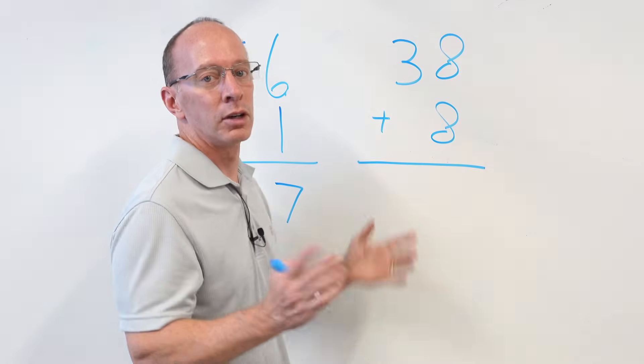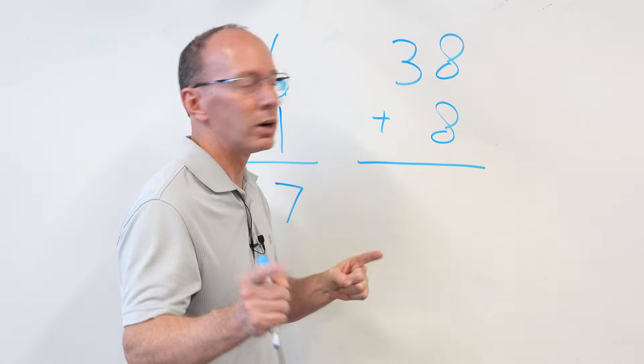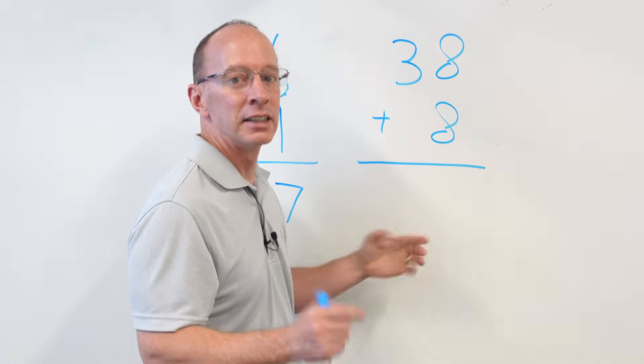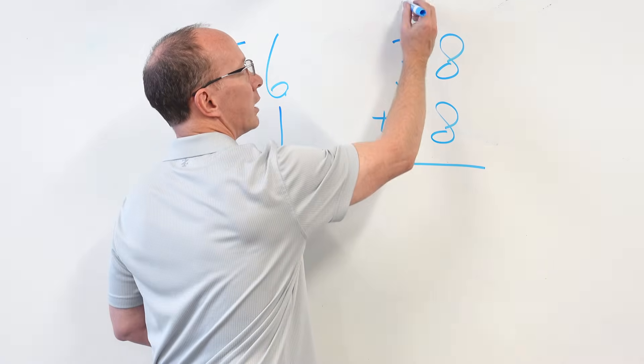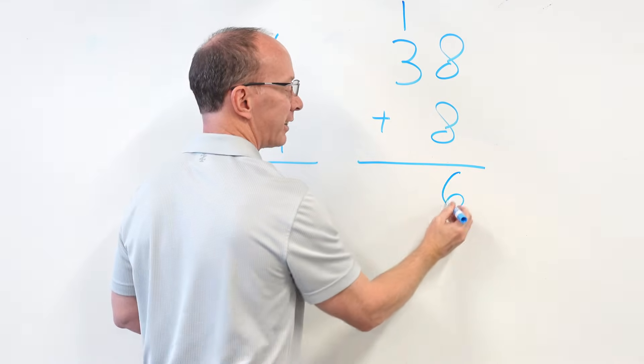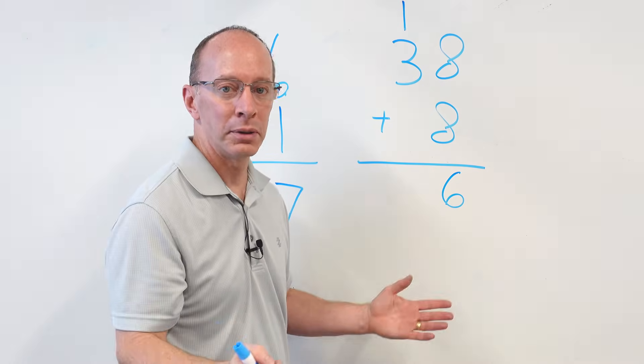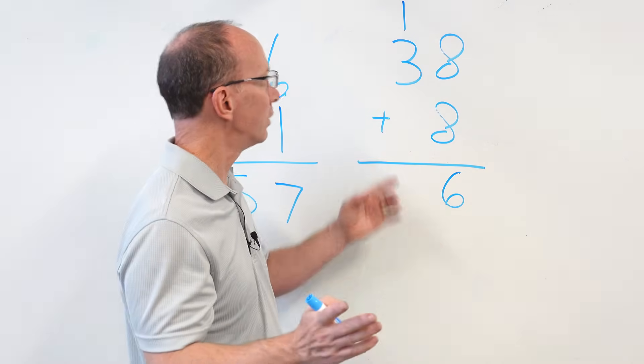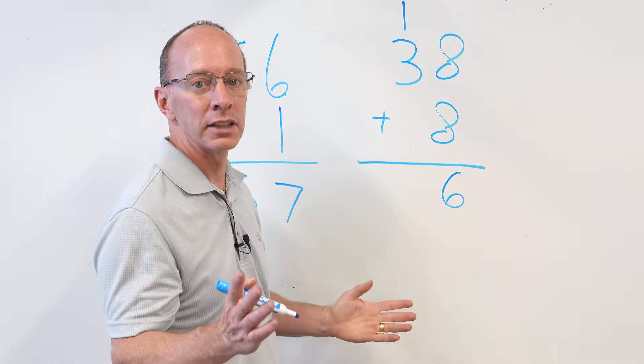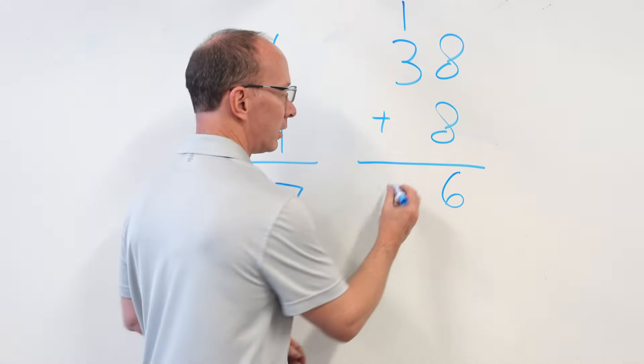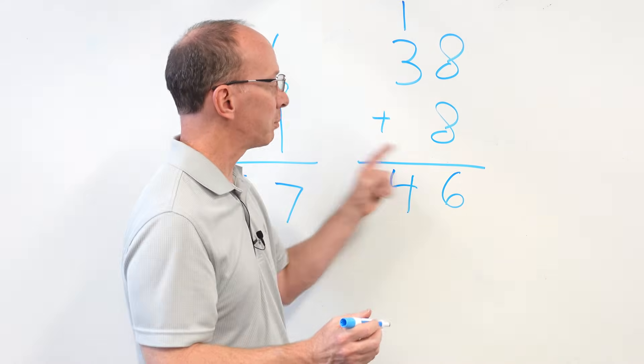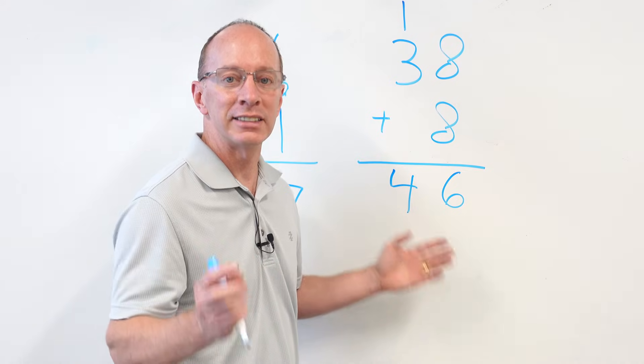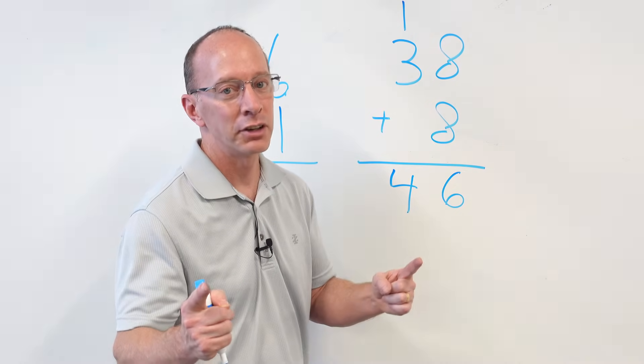38 plus 8. What do you do first? Add the ones. 8 plus 8 is 16. So you write a 1 here and a 6 there. Remember, you regroup if you have to. I had to regroup right there. Third step, add the tens. All right, let's do it. 3 plus 1, what is it? 3 plus 1, 4. 38 plus 8 equals 46. How'd you do? I know you did well.